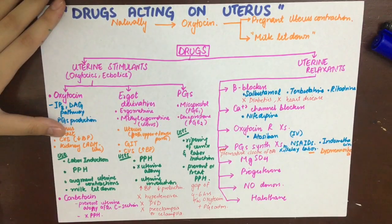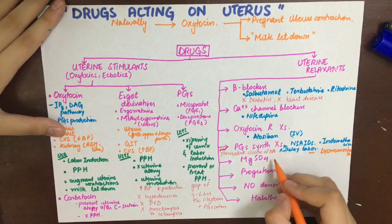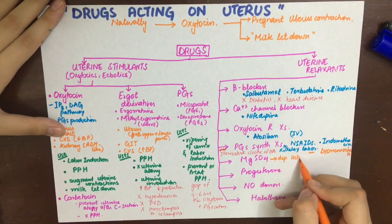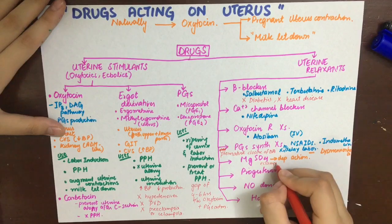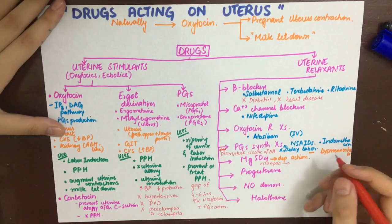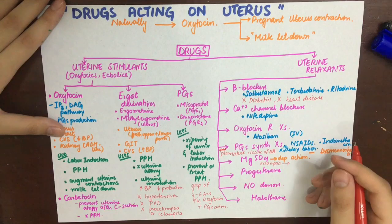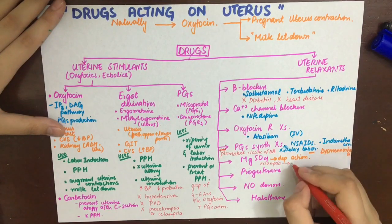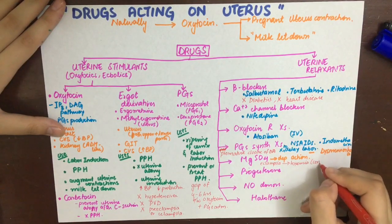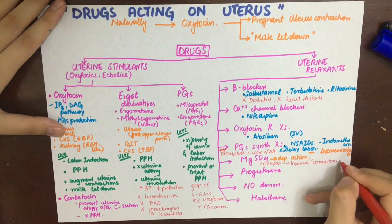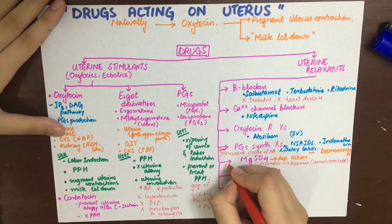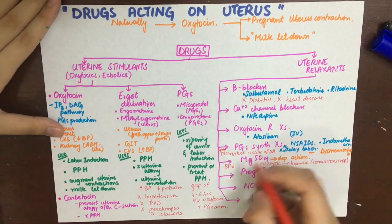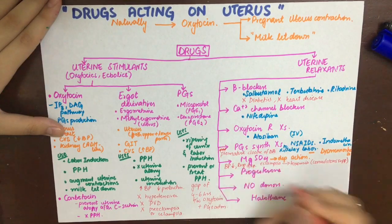MgSO4 has a depressive action on uterine smooth muscle, the CNS, and the myocardium. It can be used when pre-eclampsia has progressed to toxemia — characterized by high blood pressure and albuminuria in the pregnant patient — which can lead to convulsions due to high blood-brain barrier permeability. Its CNS depressive effect helps control convulsions. It is used when beta-blockers are contraindicated, and side effects include hypotension, decreased temperature, arrhythmias, and CNS and respiratory depression.